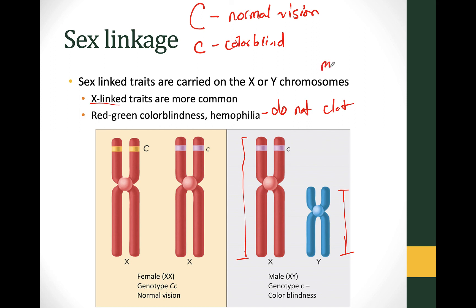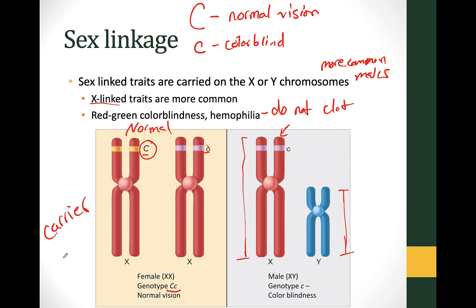A sex-linked trait is more common in males because they only have one chromosome carrying that trait — the Y chromosome does not carry the X-linked C allele. A female is XX. Here's a female who is heterozygous with big C little c. Is this person normal or colorblind? She's going to have normal vision because the dominant allele completely masks the recessive allele. She is something called a carrier — she's normal but could pass the trait on to the next generation.